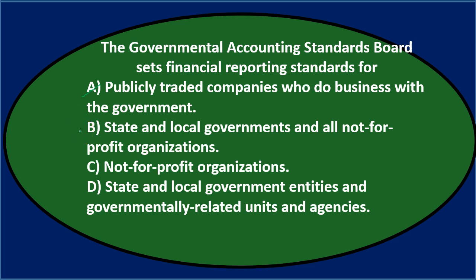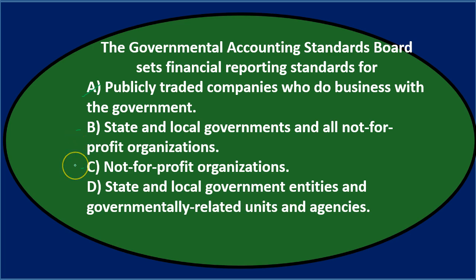Option B says state and local governments and all not-for-profit organizations. We have the state and local component, which we'd expect, but 'all not-for-profits' may not belong. Option C says not-for-profit organizations and stands alone. Since B and C are similar, if B were correct you'd think C would also have to be correct, but that's possibly not the case.